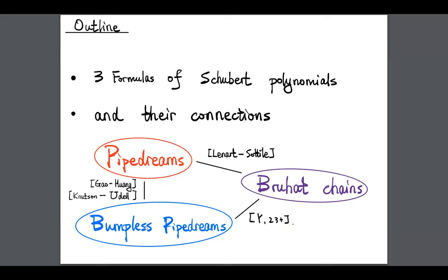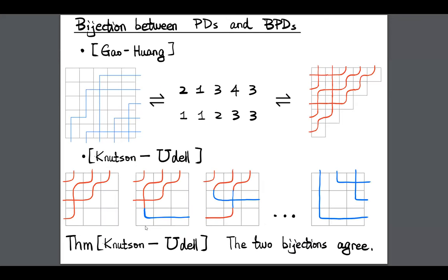Now let me describe connections between these three formulas. For the bijection between pipe dreams and bumpless pipe dreams: it's well known that pipe dreams correspond to pairs of words. Gao and Huang found a way to biject these pairs of words with bumpless pipe dreams via an insertion algorithm. More recently, Knutson and Udall defined hybrid pipe dreams — grids where some rows follow the pipe dream convention and some follow the bumpless pipe dream convention — gradually changing row conventions until arriving at an upside-down bumpless pipe dream, and their bijection agrees with the Gao–Huang bijection.